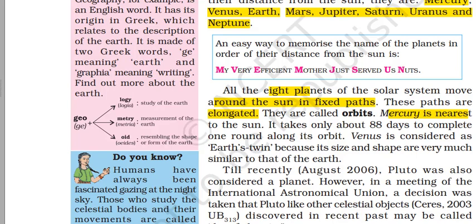All eight planets move around the sun in a fixed path. This path is elongated — it is not circular — and this path is called an orbit. Mercury is the nearest to the sun and only takes 88 days to complete one round along its orbit. Venus is considered Earth's twin because its size and shape are very similar to Earth's. Venus is also the hottest planet in the solar system.